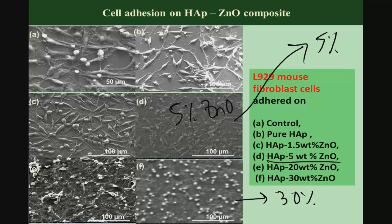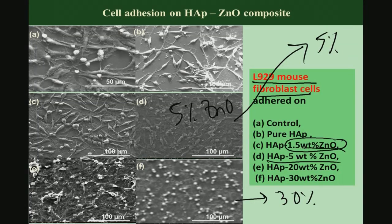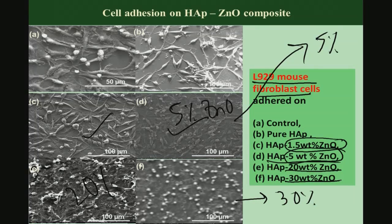One has to quantify cell viability using the MTT assay. L929 mouse fibroblast cells adhere and proliferate to some extent on lower hydroxyapatite-zinc oxide content materials — that is 1.5 and 5 weight percent. Once 20 percent zinc oxide is added, cells do not show the regular spindle-like morphology that a fibroblast cell should exhibit. Therefore, 20 and 30 percent zinc oxide would not favor the cellular response the way lower zinc oxide content materials would.